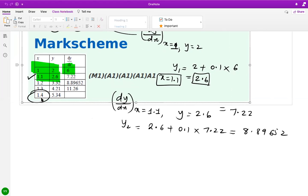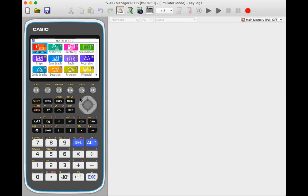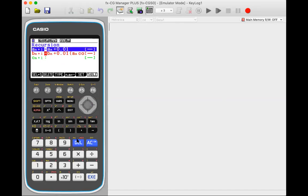As you can see, it's a rigorous procedure. I'm going to show you how to do the same on the GDC. If you go to the recursion function, when you log into this feature all the values will be blank initially.